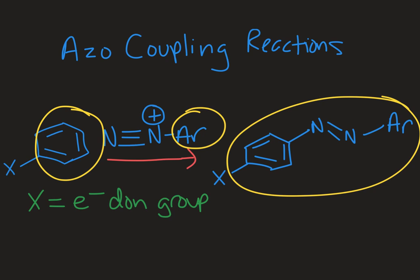You need one aryl derivative aromatic compound with an X group on it that's electron donating, and this is going to be what initiates the reaction. Then you need a diazo compound, which would be the electron acceptor in the reaction.